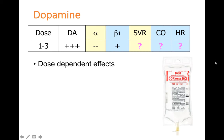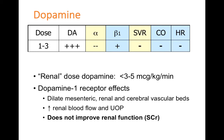Like epinephrine, dopamine is a vasoactive agent whose receptor effects vary by dose. At low doses of 1 to 3 mcg/kg/min, you primarily activate dopamine-1 receptors — often called 'renal dose dopamine' — which dilates vessels feeding the kidneys, increasing renal blood flow and urine output. However, when studied in the literature, renal dose dopamine does not improve serum creatinine or prevent progression to kidney disease or dialysis. Therefore, use of low-dose dopamine solely to protect the kidneys is not recommended.